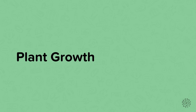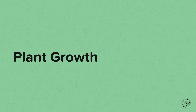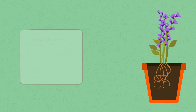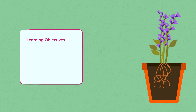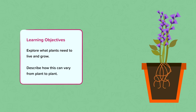This nugget is about plant growth. In this nugget we are going to explore what different things plants need in order to live and grow. Then we're going to look at and describe how this can vary from plant to plant.